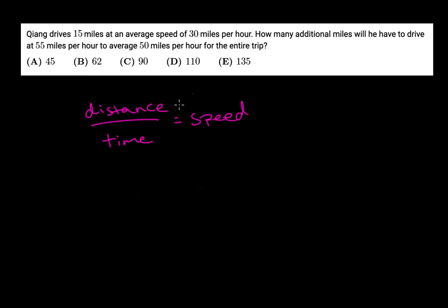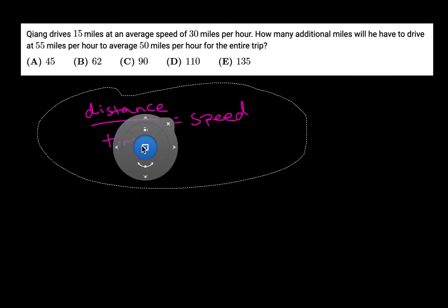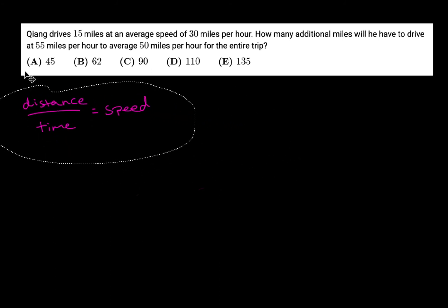In this case they've given us the target speed and we can set up an equation to find out what x is, and x we can define as the variable for how many additional miles he'll be traveling.